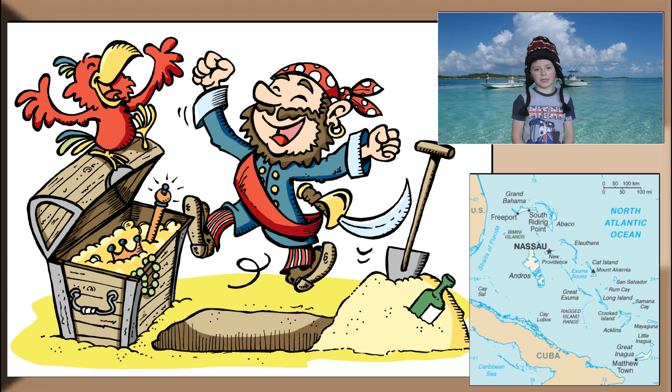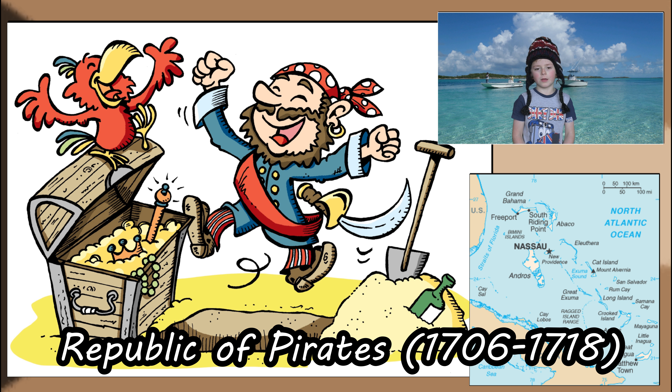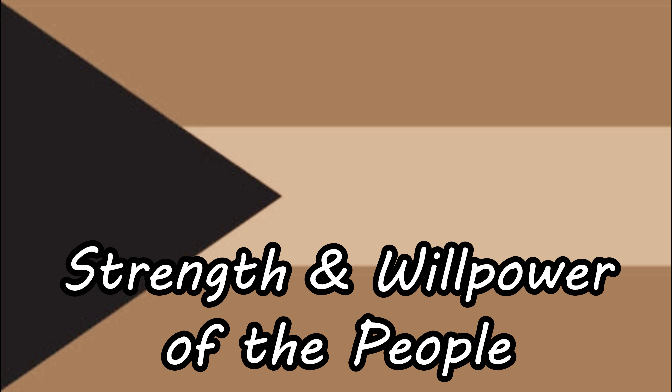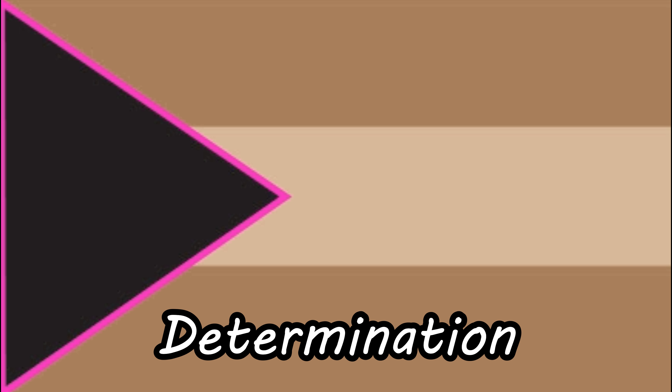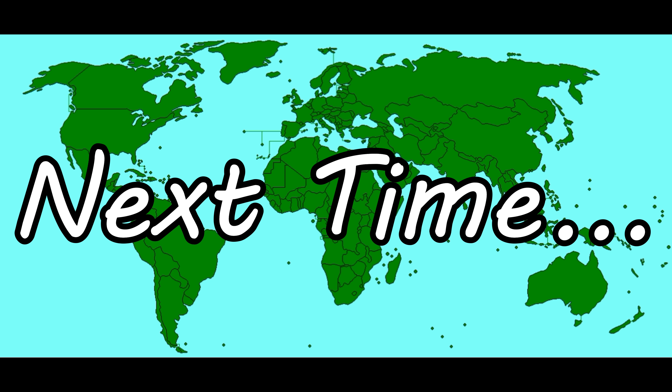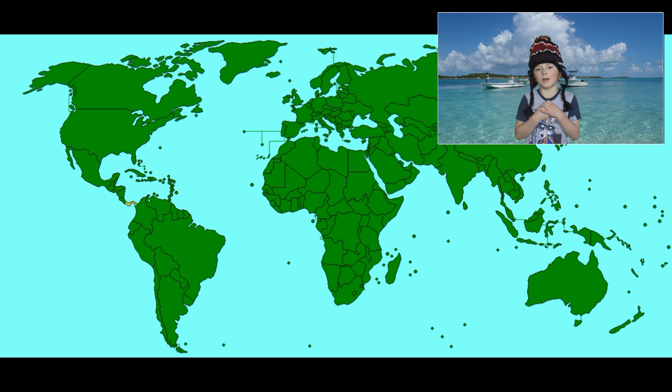They even had a pirate base in the south called the Republic of Pirates, from 1706 to 1718. Now, the flag of the Bahamas: the black represents the strength and willpower of the Bahamian people, and it's in a triangle to show their determination. The gold represents the sun, and the blue represents the sea that surrounds the country. Next time we are going to look at Barbados.